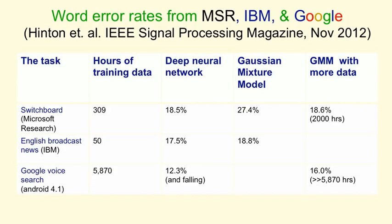IBM, which has the best system for one of the standard large vocabulary speech recognition tasks, showed that even its very highly tuned system getting 18.8% can be beaten by one of these deep neural networks.